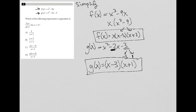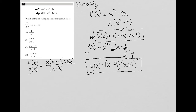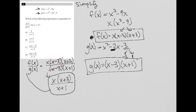Now the question asks: which expression is equivalent to f(x) over g(x) for x greater than 3? So f(x) divided by g(x) — using my simplified forms — has numerator x(x - 3)(x + 3) over (x - 3)(x + 1). Immediately I see the (x - 3) terms cancel, leaving x(x + 3) divided by (x + 1). There's nothing more to simplify, so my answer is choice D.